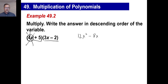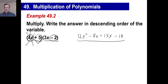You're going to do exactly the same thing to the positive 5 that you did to the 4x. So let's take positive 5 times 3x — that'll give us positive 15x. And positive 5 times negative 2 is negative 10. Now you don't want to leave it like this. If you have any like terms, shove them together. A negative 8x plus a 15x will give you positive 7x, and we have a negative 10 at the very end.